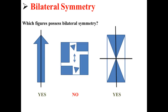This third figure does have bilateral symmetry. We can pass either this vertical line or this horizontal line through it and create two equal halves. This figure possesses bilateral symmetry.